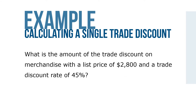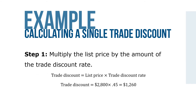Let's take a look at an example. What is the amount of a trade discount on merchandise with a list price of $2,800 and a trade discount rate of 45%? Step 1: Multiply the list price by the trade discount rate. The trade discount equals $2,800 times 0.45, which equals $1,260.